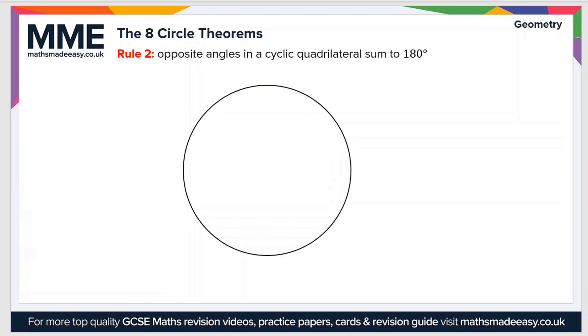Moving on to rule number two, which is that opposite angles in a cyclic quadrilateral sum to 180 degrees. Let's draw a cyclic quadrilateral. A cyclic quadrilateral is a quadrilateral formed by drawing four points on the circumference of a circle like so.